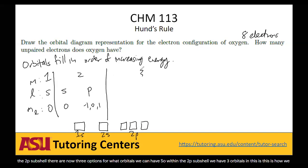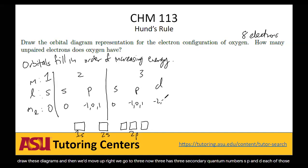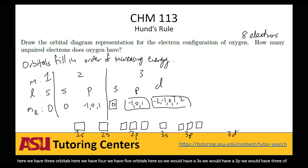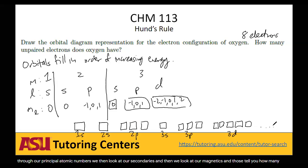Then we move up to principal number three, which has three secondary quantum numbers: s, p, and d. The magnetic quantum numbers for each tell you how many orbitals exist — one orbital for 3s, three for 3p, and five for 3d. As we go through the principal quantum numbers, we look at the secondaries, then the magnetics, and those tell you how many orbitals you have broken down by subshells.